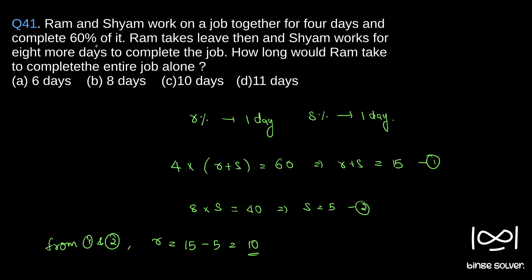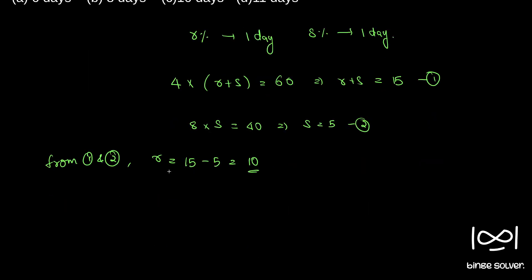R is 10. How long would Ram take to complete the entire job alone? R is the percentage of work that Ram completes in one day, so 10 percentage of work is completed in one day. Let the number of days be d. Then d into 10 percentage equals 100 percentage, which gives d equal to 10.